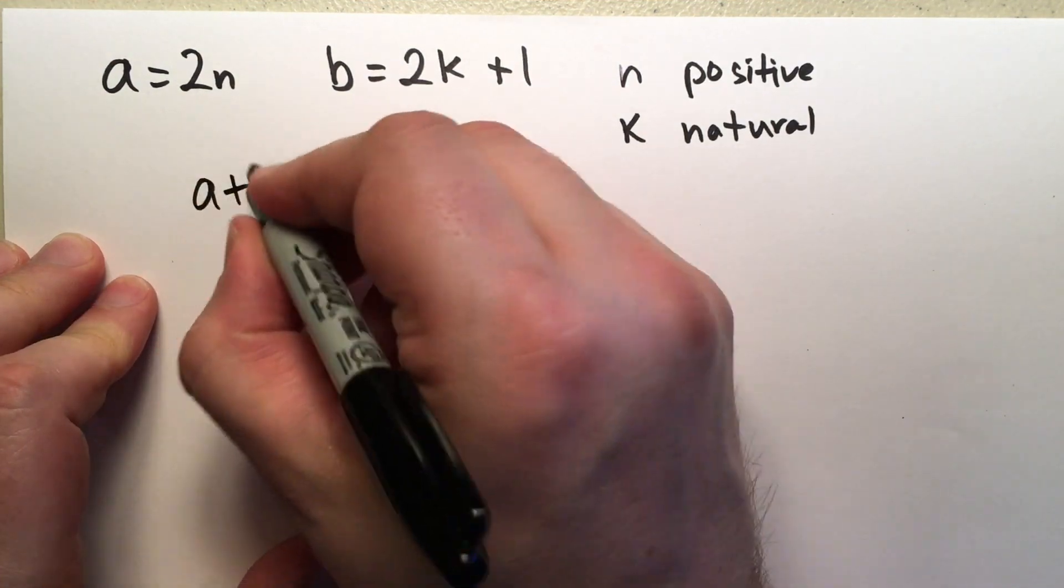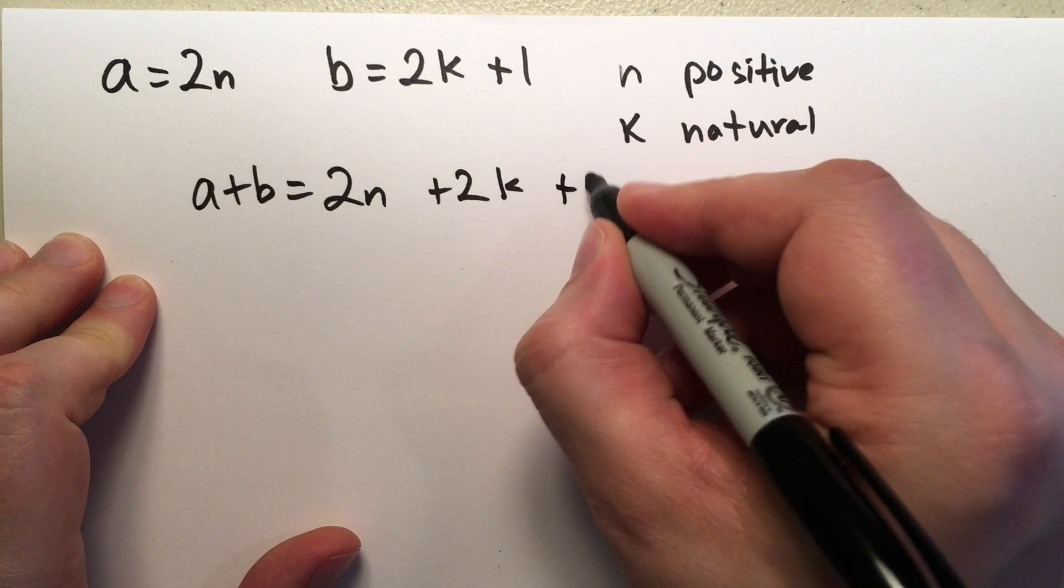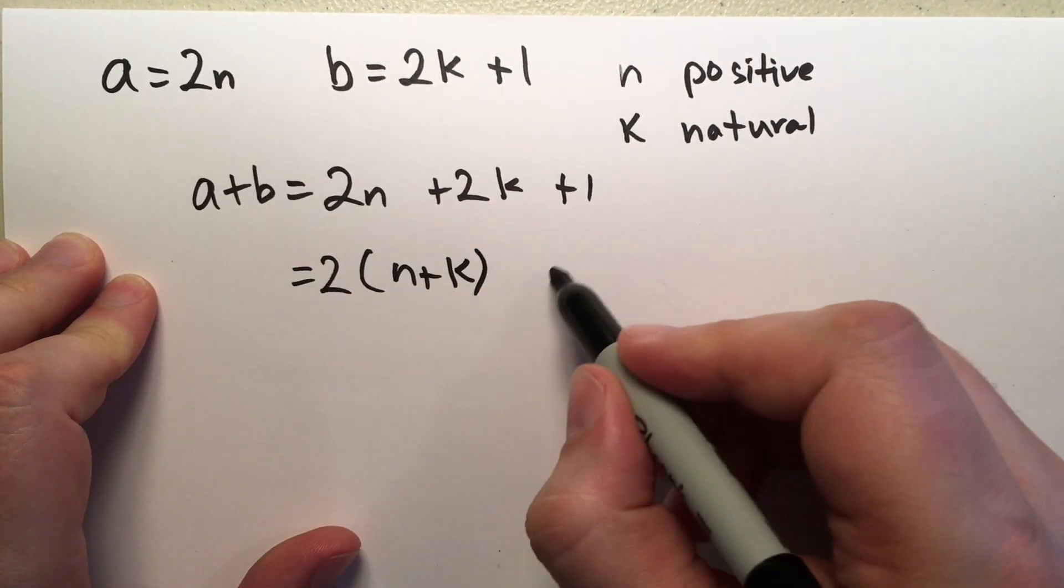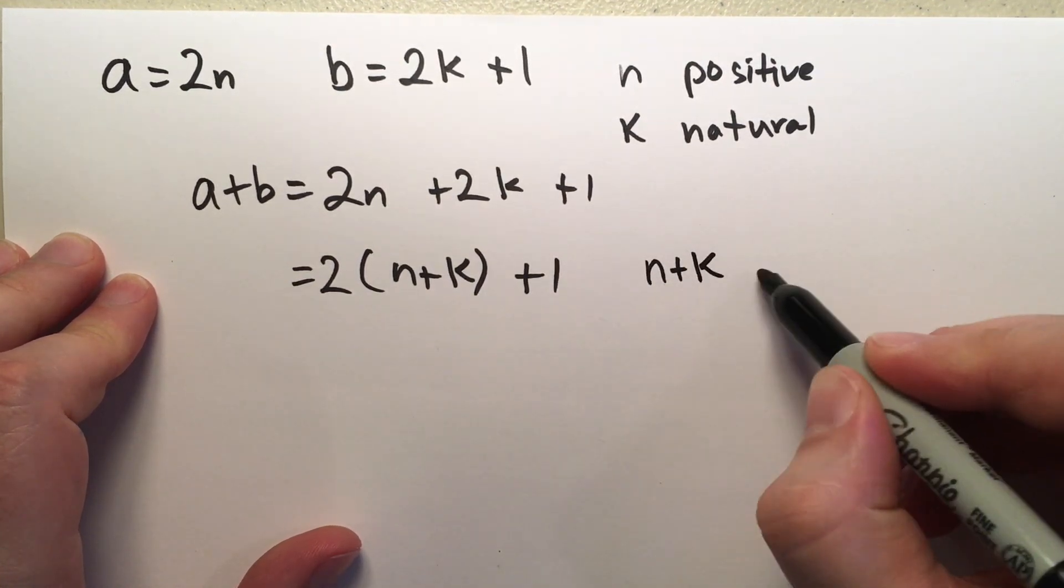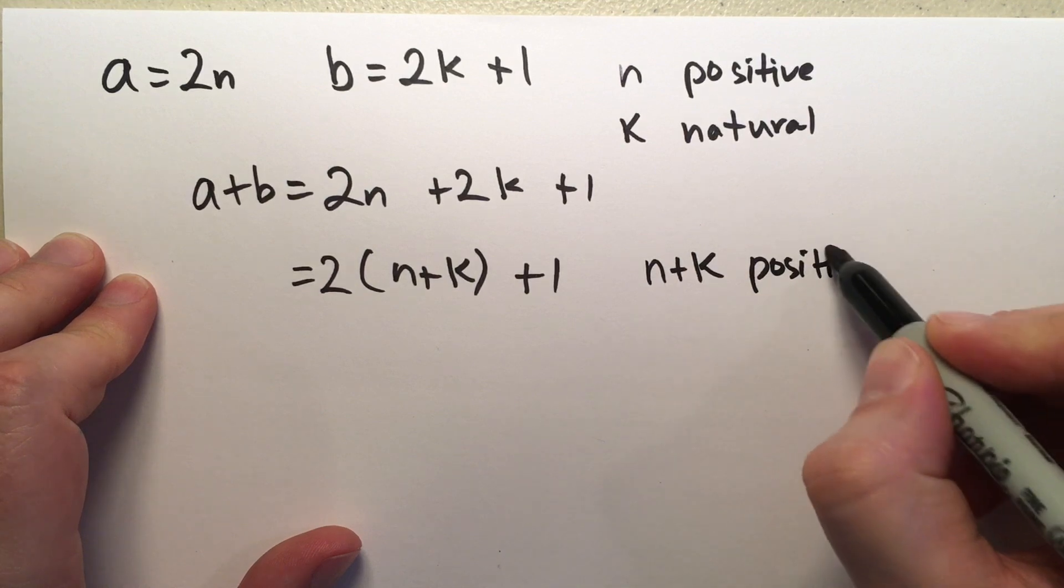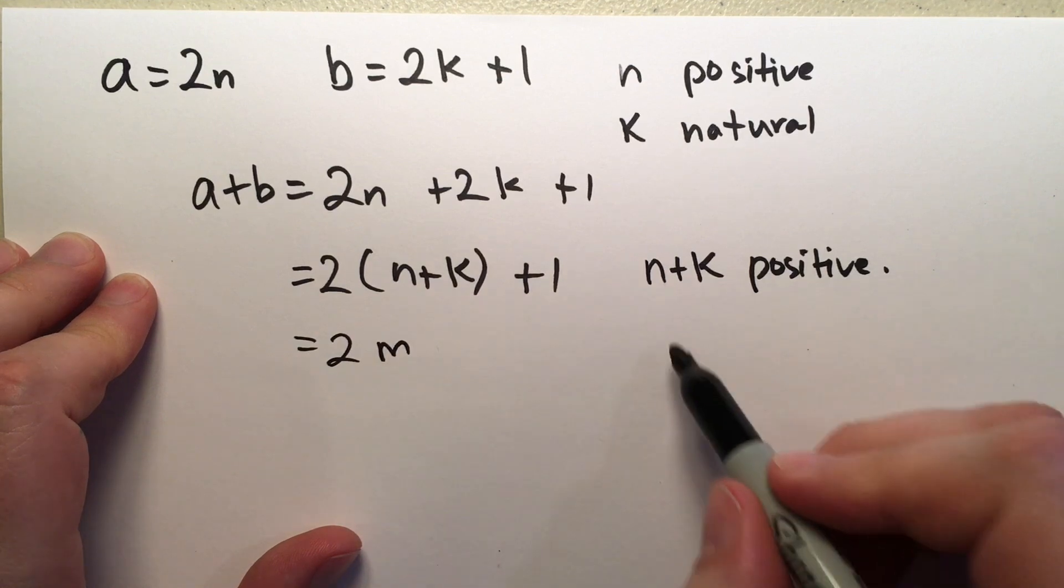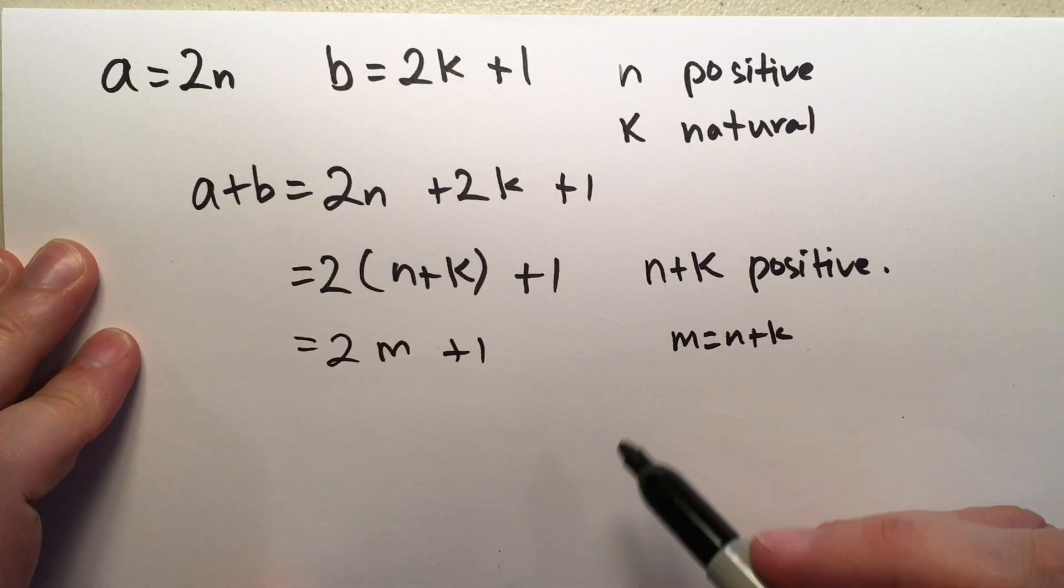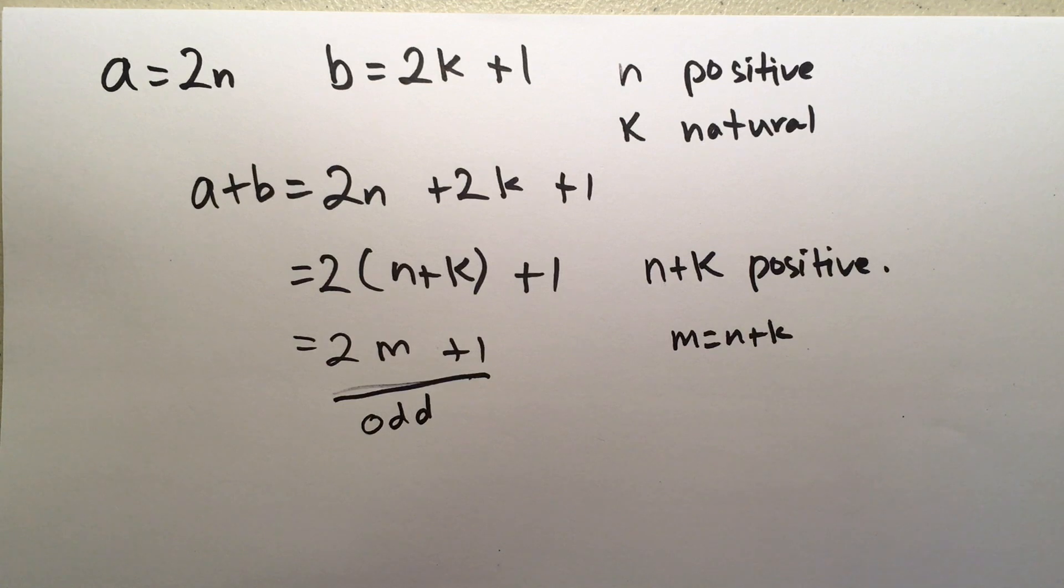So, let's add A plus B. That's going to be 2N plus 2K plus 1, which, if we factor out that 2, we get N plus K times 2 plus 1. And we note that N plus K is a positive integer. So, we get 2 times M, where M equals N plus K plus 1, which is odd.